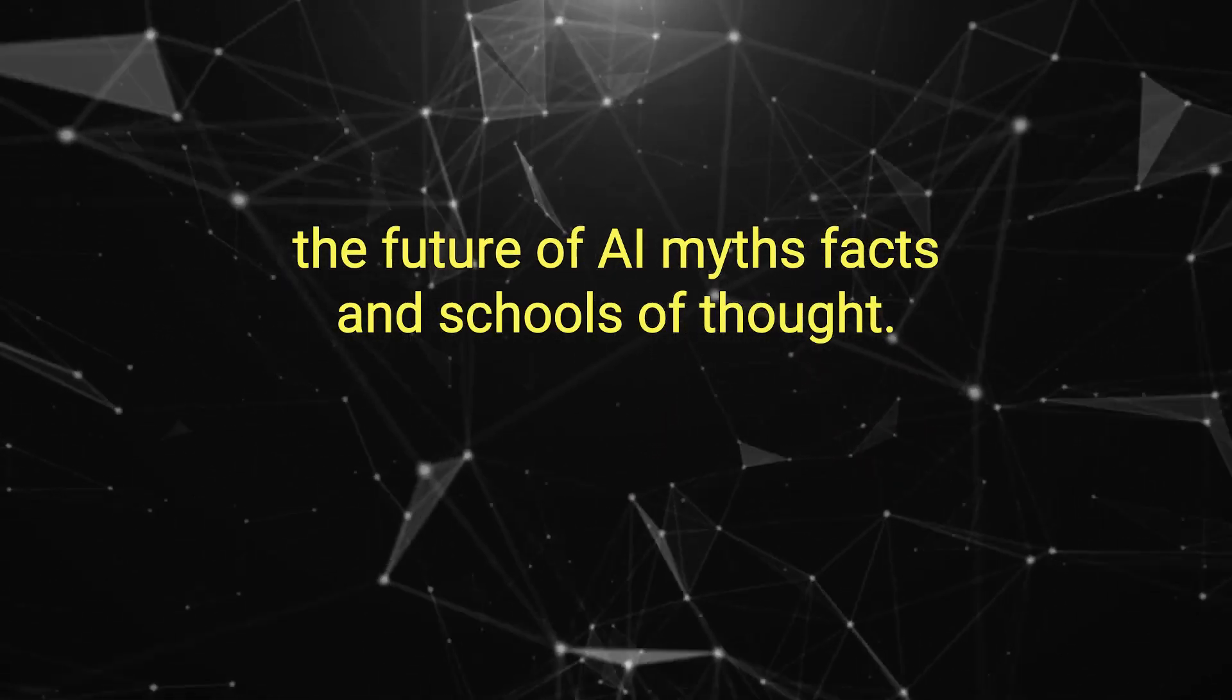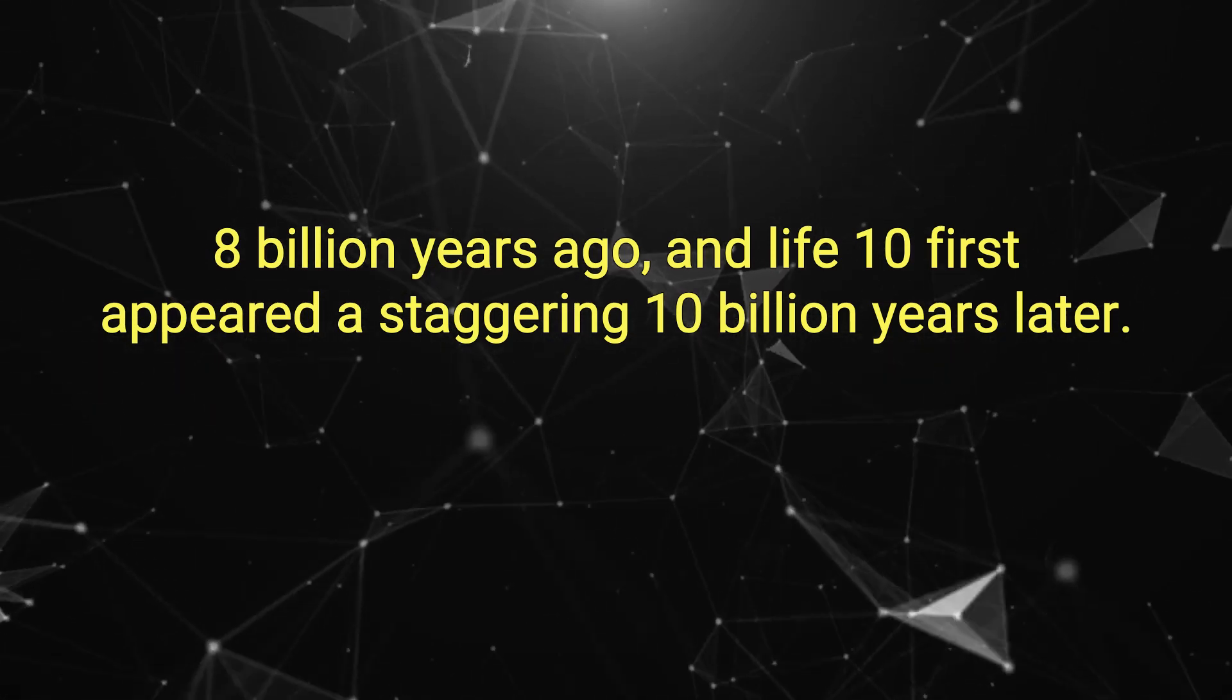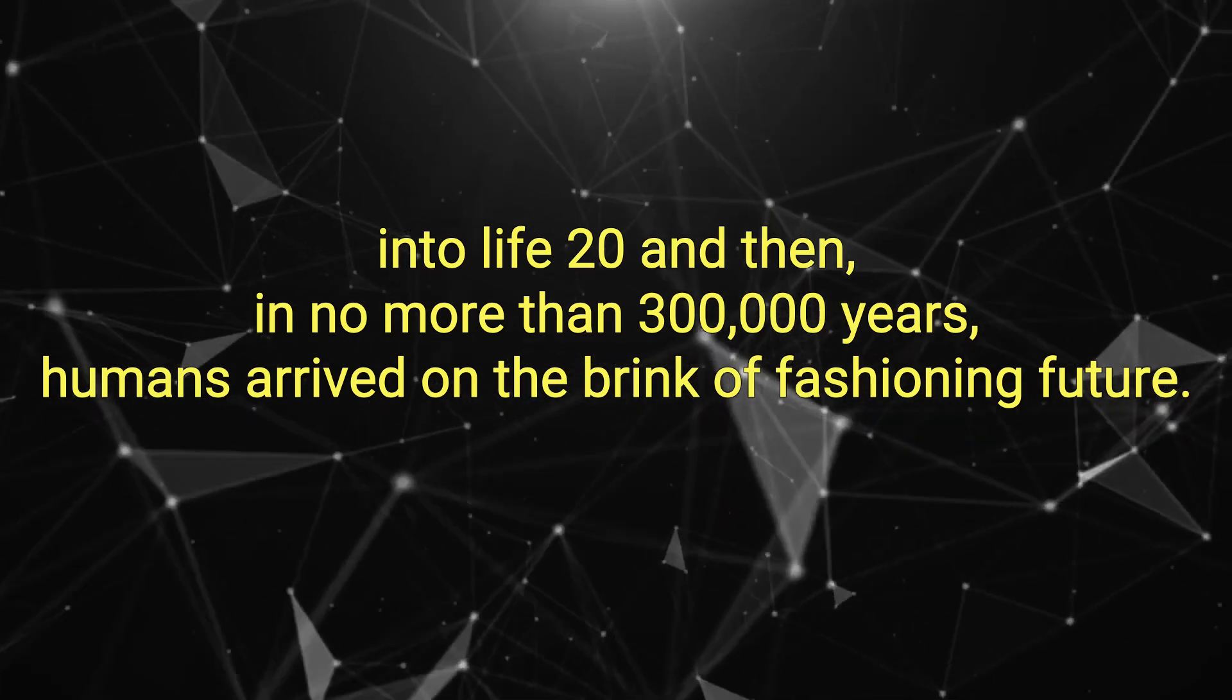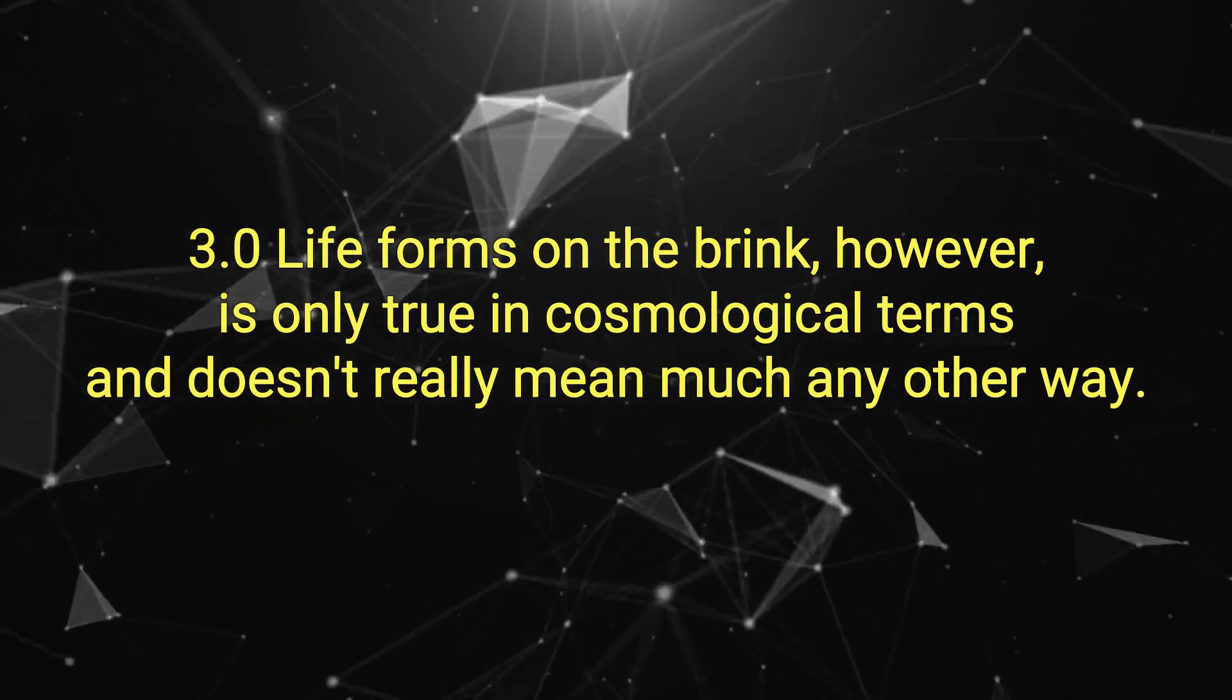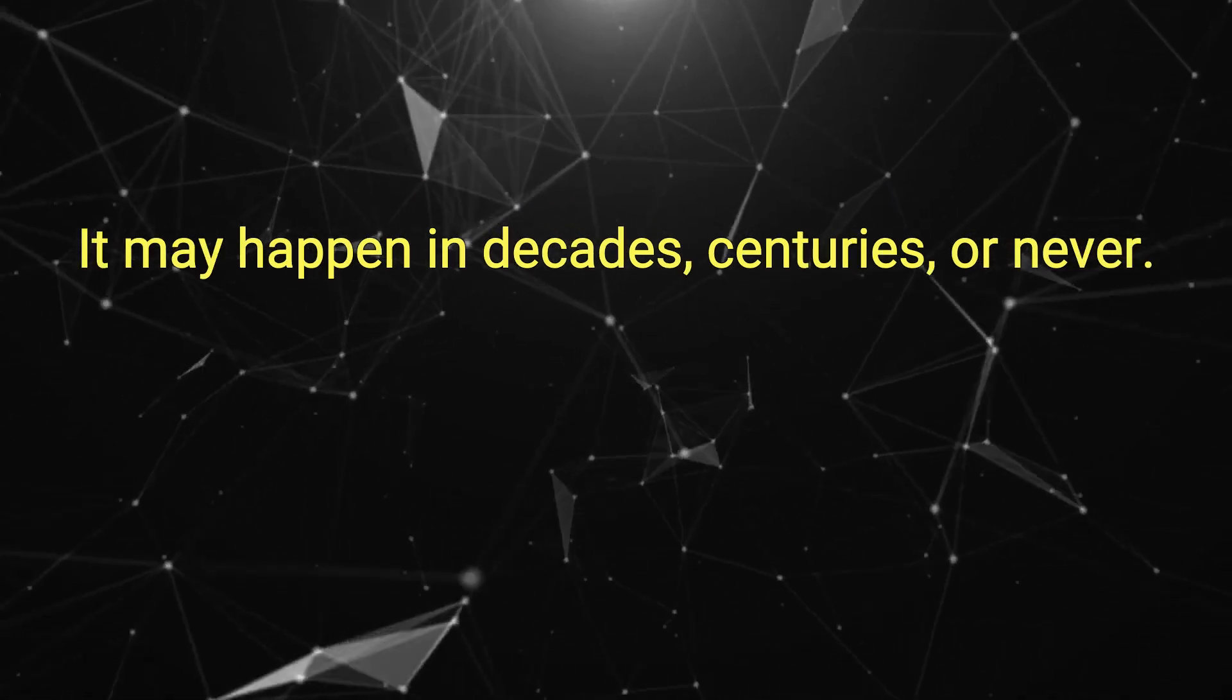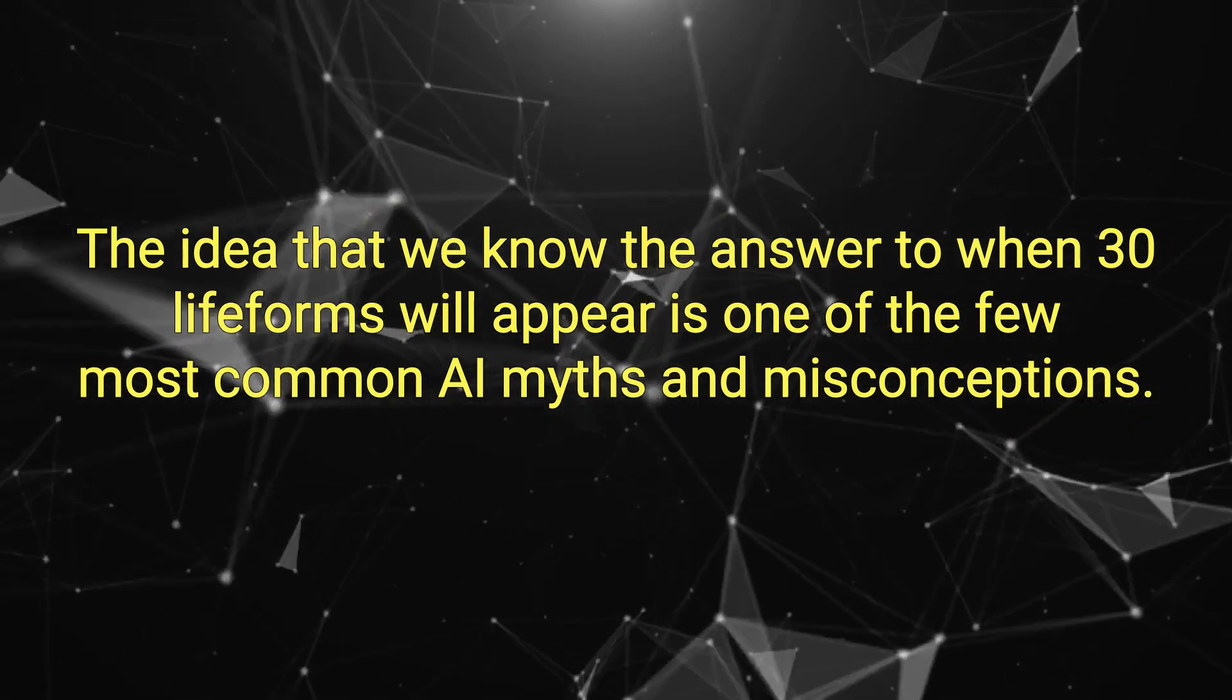The future of AI: myths, facts, and schools of thought. The universe originated 13.8 billion years ago, and Life 1.0 first appeared a staggering 10 billion years later. It took Life 1.0 about 4 billion years to evolve into Life 2.0, and then in no more than 300,000 years, humans arrived on the brink of fashioning future 3.0 life forms. On the brink, however, is only true in cosmological terms. It is neither inevitable nor impossible. It may happen in decades, centuries, or never. The idea that we know the answer is one of the few most common AI myths and misconceptions.